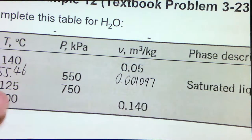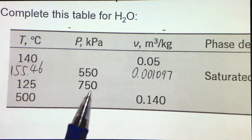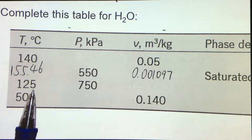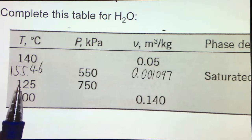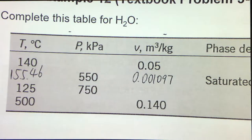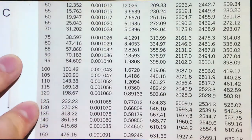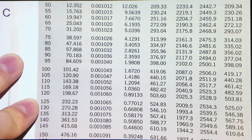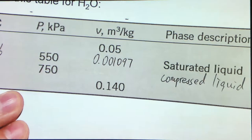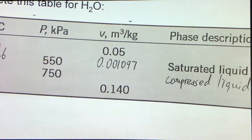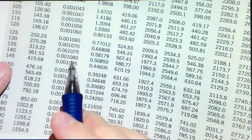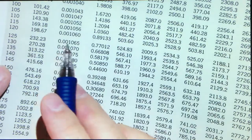Let's go to the third row. We have a pair of pressure and temperature, which means it's either a compressed liquid or superheated vapor. To determine which, I choose the temperature as the saturation temperature and check the pressure using Table A4. At 125°C, the saturation pressure is 232.23 kPa. But the given pressure is much greater than that, so it should be a compressed liquid. For the specific volume, since the compressed liquid table requires very high pressure, we use the approximation: V ≈ VF at 125°C from Table A4, which gives 0.001065.